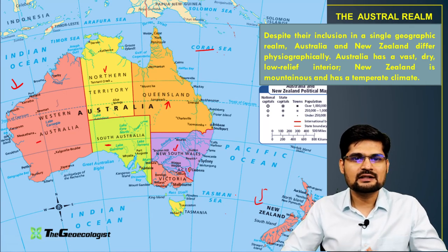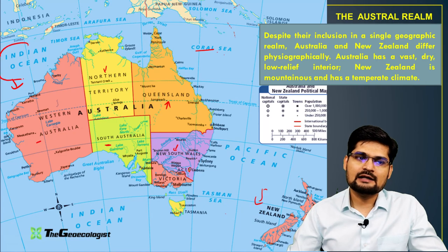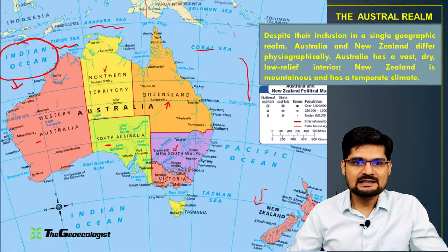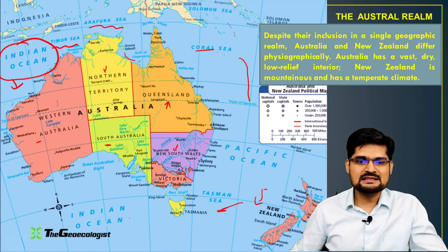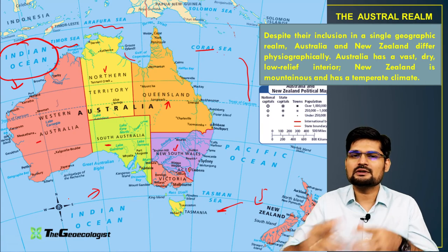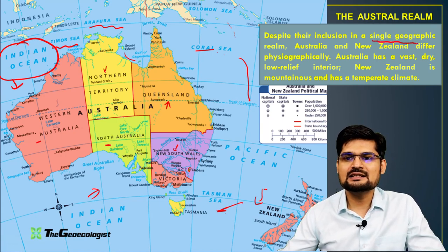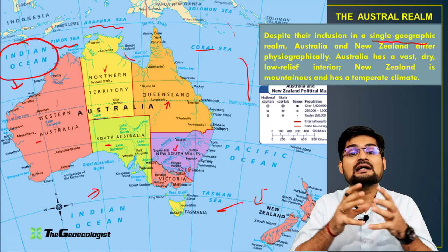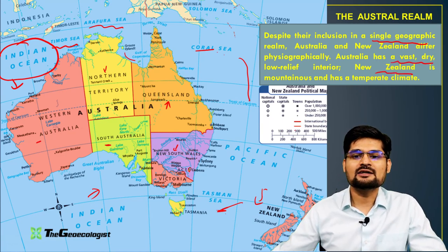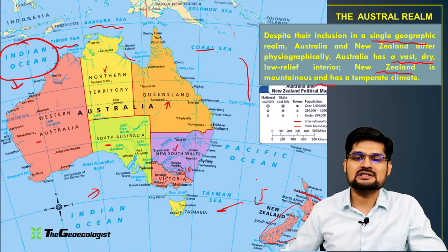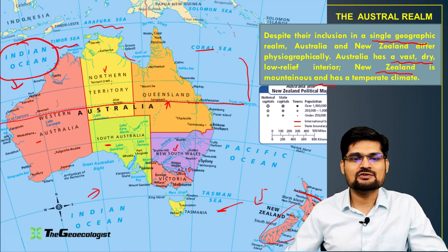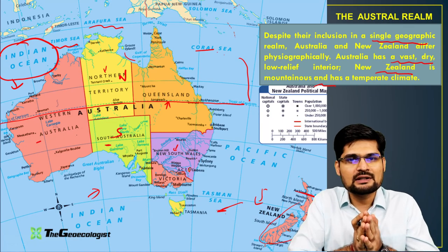If you observe this particular area, it has a lot of oceanic coverage — right from the Indian Ocean to the Pacific Ocean — and a lot of other seas around it: Timor Sea, Arafura Sea, Gulf of Carpentaria, and Tasman Sea. Despite their inclusion in a single geographic realm, these two distinct land masses are very different geographically. Australia has a vast desertic, dry condition, while New Zealand has a mountainous and temperate condition. The Tropic of Capricorn almost bisects Australia into the North and the South — a very important and interesting feature.